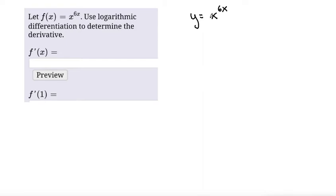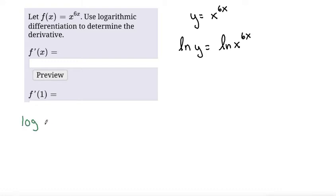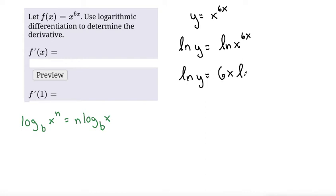The idea of logarithmic differentiation is to take the natural log of both sides. So we're going to take the natural log of y and set that equal to the natural log of x to the power of 6x. We can use the rule of logarithms: log base b of x to the power of n equals n times log base b of x. Since natural log is log base e, we can kick the 6x to the front, giving us ln(y) = 6x · ln(x).